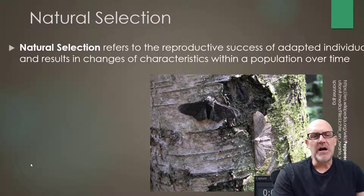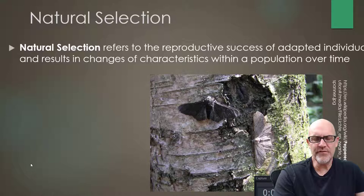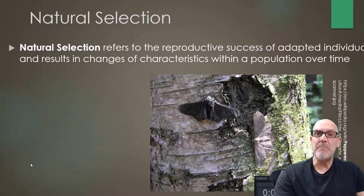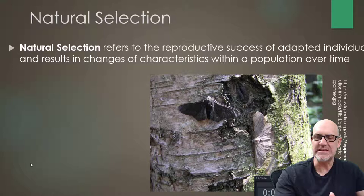This example is going to turn up in most of your textbooks. It has for 100 years and it will continue to do so because it's an excellent example. The first thing I want to do is look at this definition: natural selection refers to the reproductive success of adapted individuals and results in changes of characteristics within a population over time. Obviously that's a lot of concepts to try and understand, so I want to unpack that.